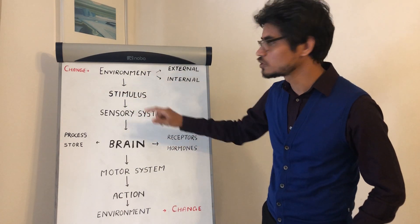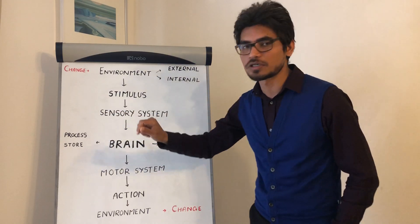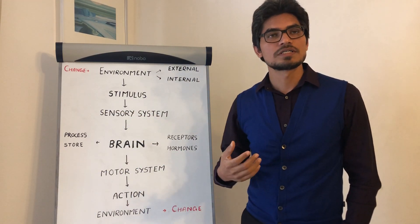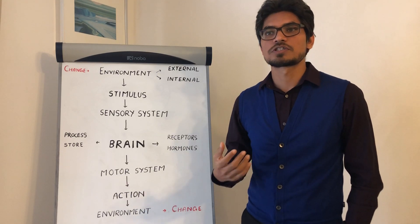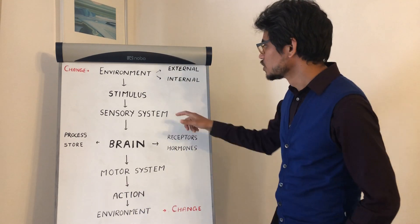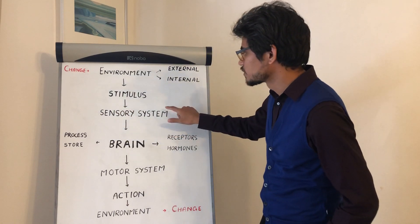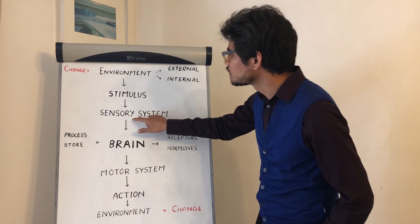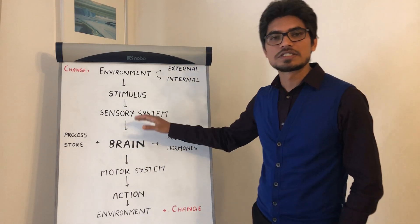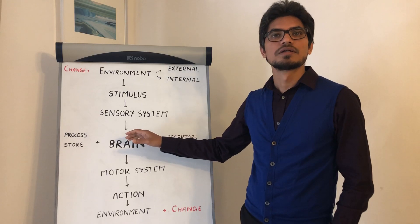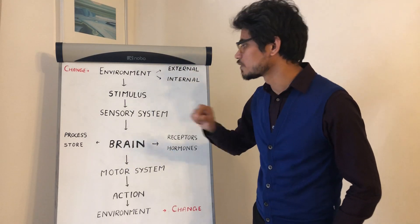This stimulus is detected by our sensory system, which could be our eyes, ears, nose, tongue, or skin. The stimulus is detected by the sensory system and this information is relayed to our brain. This is done by nerves called sensory nerves.